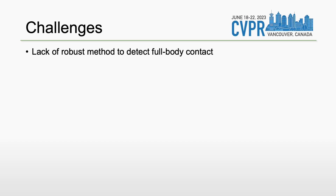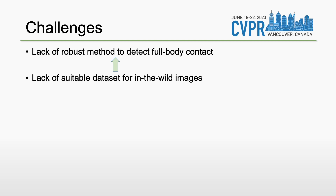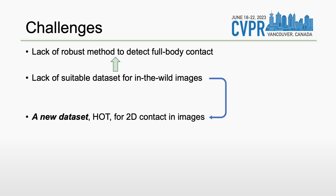However, there exists no robust method to detect contact between the body and the scene from an image, and there exists no dataset to learn such a detector. In this paper, we fill this gap with HOT, a new dataset of human-object contacts in images.